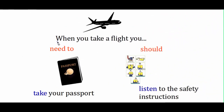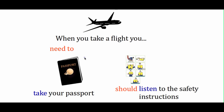Let's look at a situation. When you take a flight, you need to or should: take your passport, and listen to the safety instructions. On an aeroplane, someone will ask you to listen to the safety instructions, but you don't have to — it's just a strong suggestion. So we use 'should': 'You should listen to the safety instructions.' To get on an aeroplane, you must have your passport — that is an obligation, so we use 'need to': 'When you take a flight, you need to take your passport.'